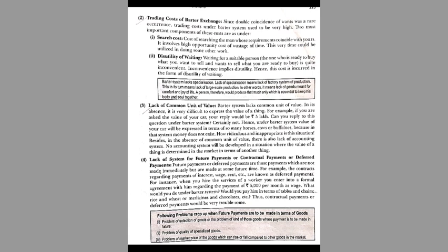The second component is the disutility of waiting — waiting for a suitable person who is ready to buy what we want to sell and sell what we want to buy. This is quite inconvenient, and the cost is incurred in the form of the disutility of waiting for a person who is simultaneously ready to buy and sell what you need.